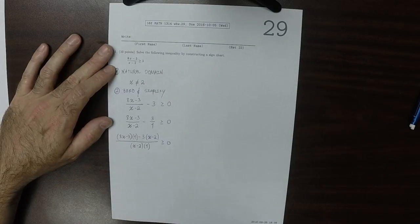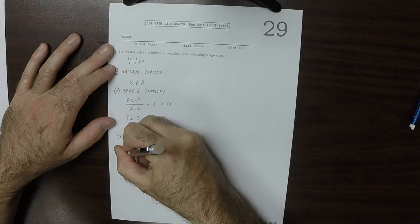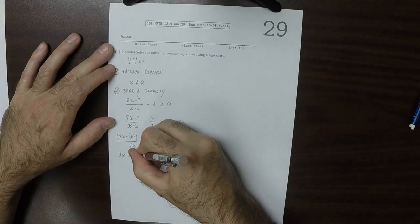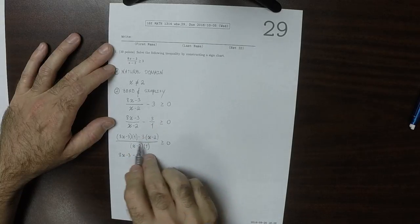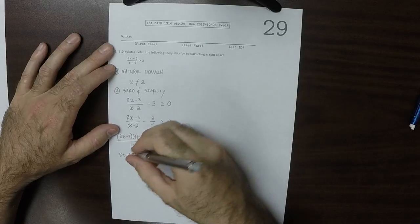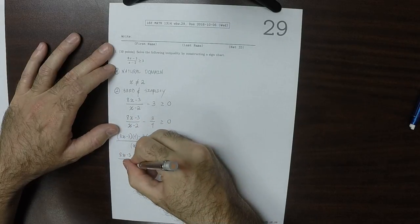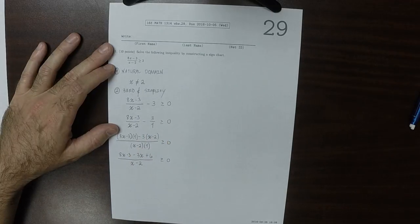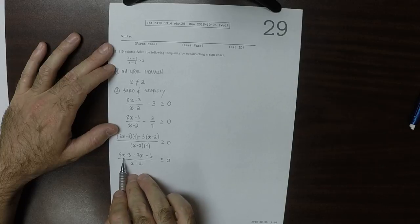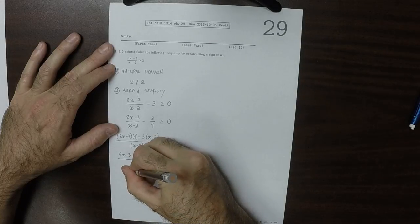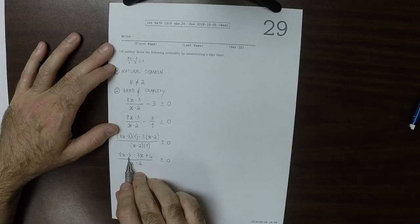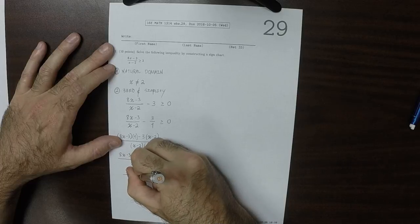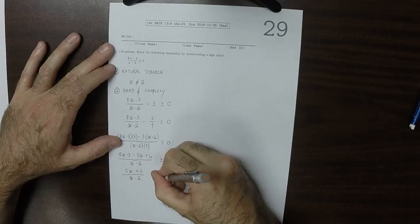So now I'm going to simplify the numerator. That would be 8x minus 3, and then minus 3x, and then plus 6, and then this over x minus 2, greater or equal to 0. So then 8x minus 3x is 5x, and then negative 3 plus 6 is plus 3, and then over x minus 2 is greater or equal to 0.